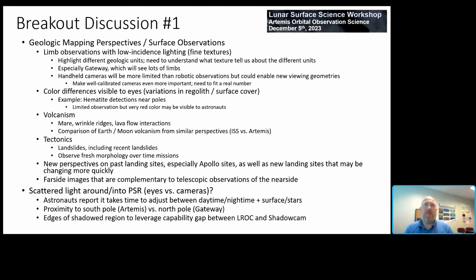This is especially true of Gateway, where astronauts will have lots of opportunities to see limbs. One concern is that handheld cameras may be more limited in coverage for robotic observations, but they could enable new types of viewing geometries or make those geometries more routine. Calibrated cameras are important, with further discussion about calibration to follow. Color differences, especially those visible to the eye, were discussed in all three breakouts. In one breakout, hematite detections near the poles were mentioned — this could be a reddish color mineral that's especially easy for eyes to distinguish from background surface cover.